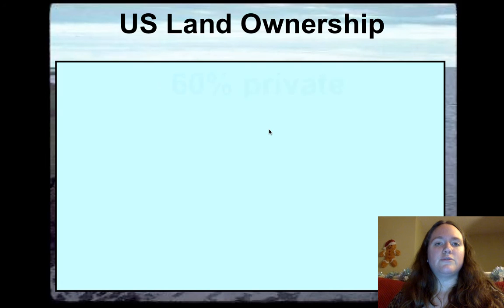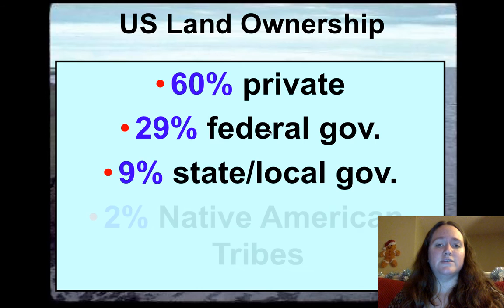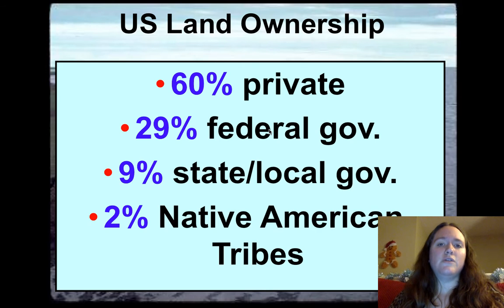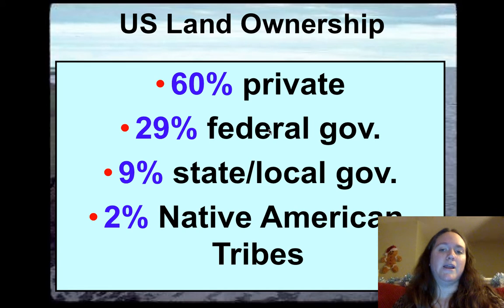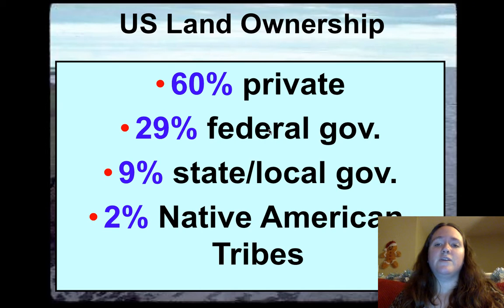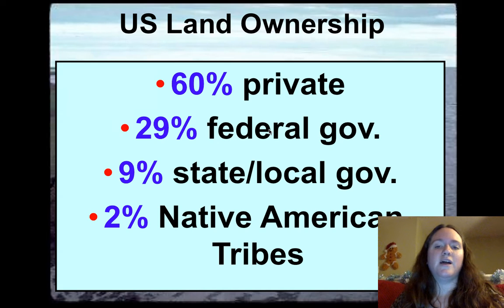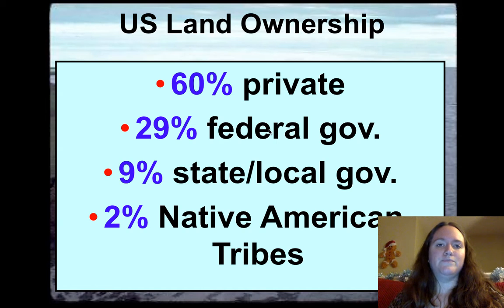Now let's go through lands in the United States and what percentage is owned by whom. 60% of land in the US is privately owned — houses and so on. 29% is owned by the federal government, 9% by state and local governments, and 2% is set aside for Native American tribal reservations, where they operate under their own laws in some situations.